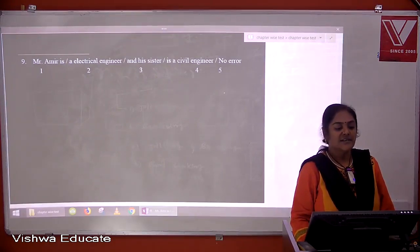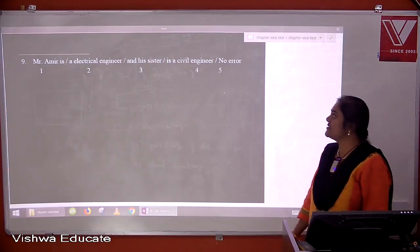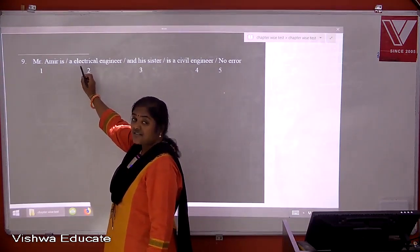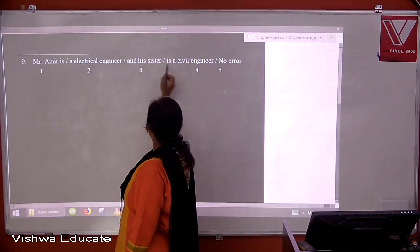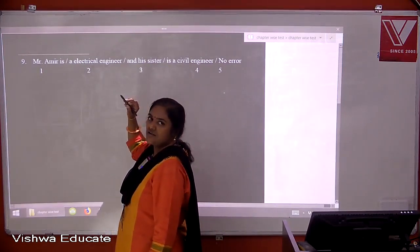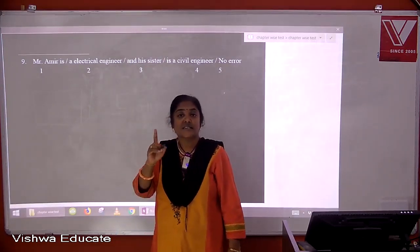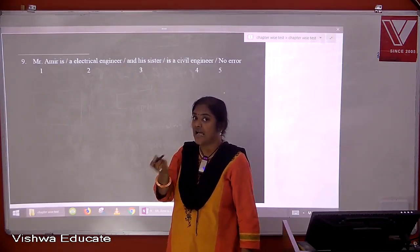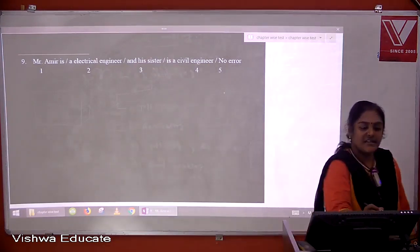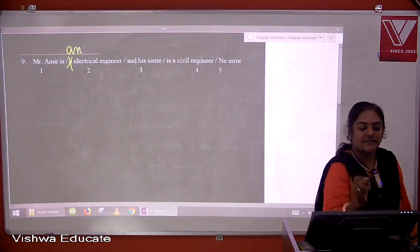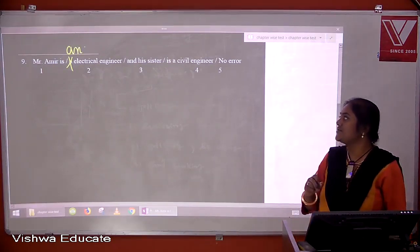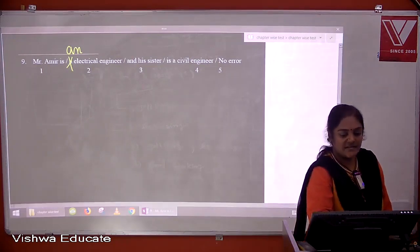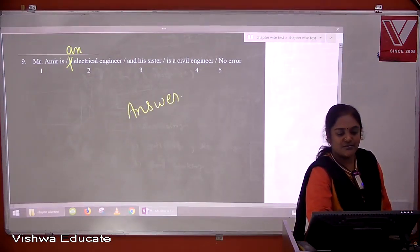Question nine: Mr. Amir is a electrical engineer and his sister is a civil engineer. Look at 'electrical' — it begins with a vowel sound. Words with vowel sounds take 'an', not 'a'. 'Civil' has a consonant sound, so 'a civil engineer' is correct. Therefore it should be 'an electrical engineer'. The answer is two.